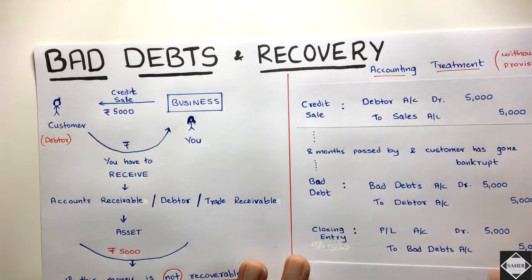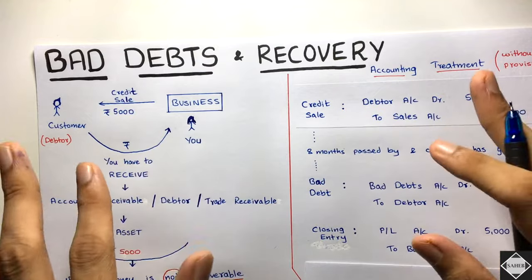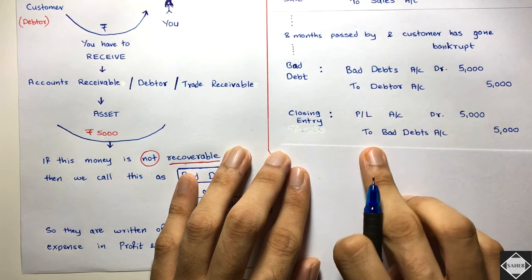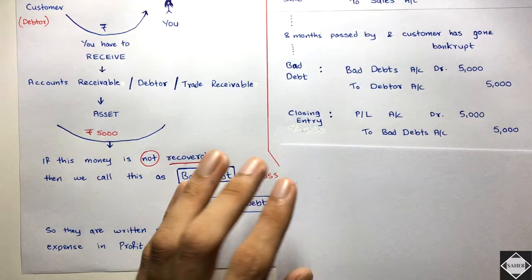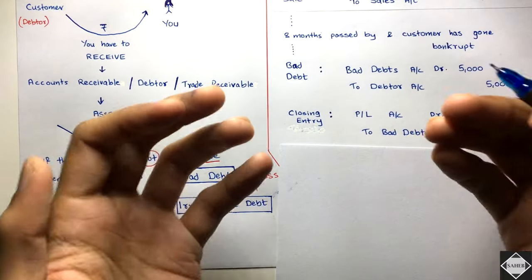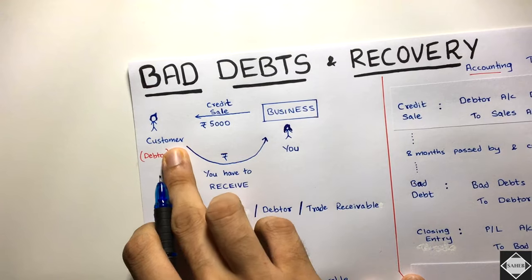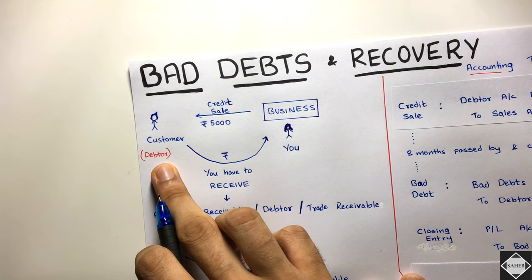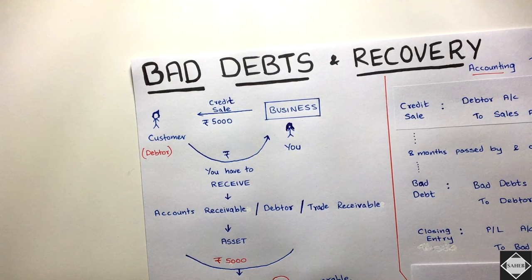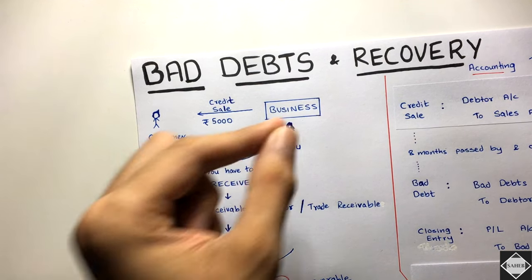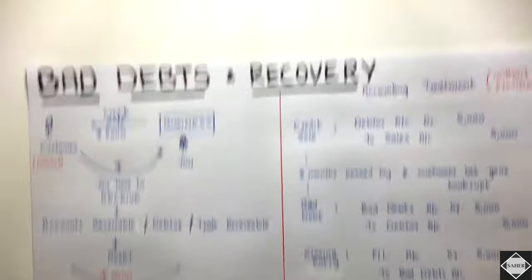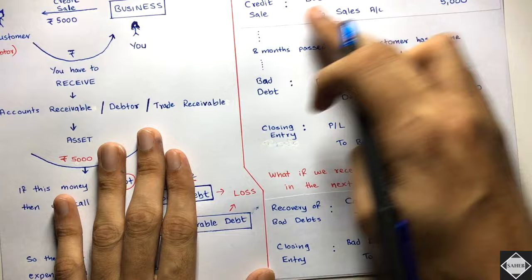Now let's come to recovery of bad debts. Sometimes in the current year a bad debt is recorded — you cancel the asset and transfer the loss to profit and loss, financial statements are prepared, everything is done. Then in the next year, the customer may come back and pay you the money, saying his condition was bad before but now he has funds. This is recovery of bad debts.